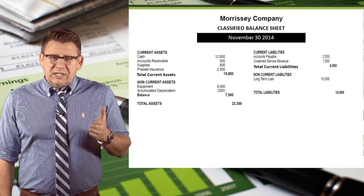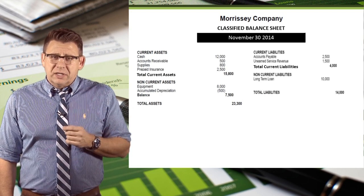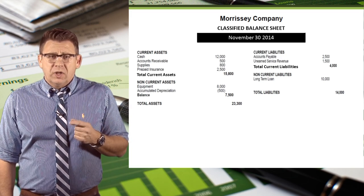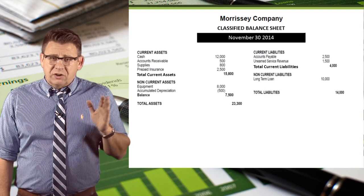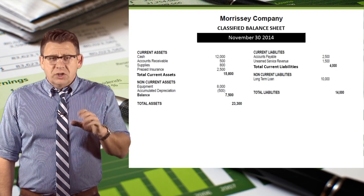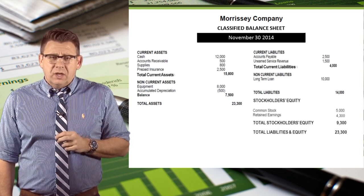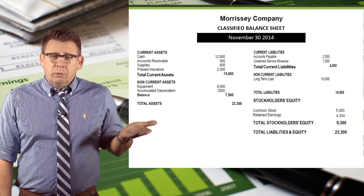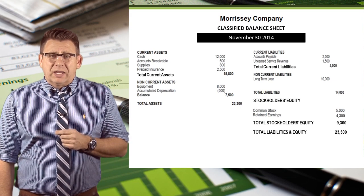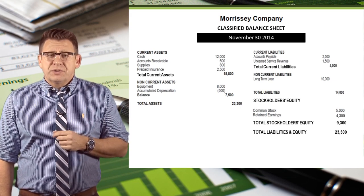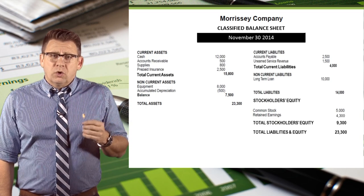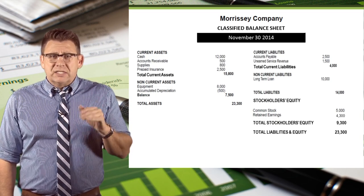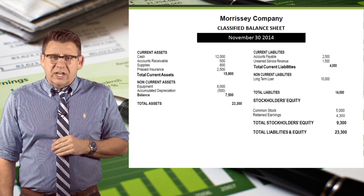Then we move to the liabilities side and start with current liabilities. Here we list our liabilities in order of liquidity and then total them. Long-term liabilities are then listed, and then we total liabilities. Finally, we prepare the stockholders' equity section. We report common stock from the trial balance and retained earnings from the statement of retained earnings, then total stockholders' equity. Finally, total liabilities and stockholders' equity are reported.